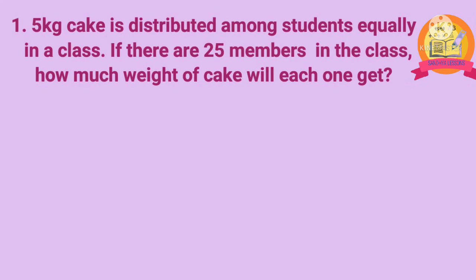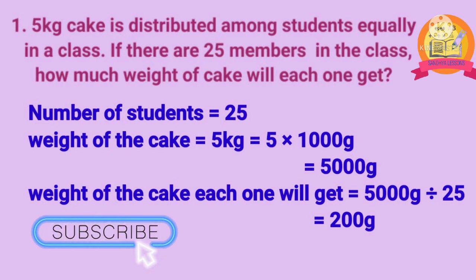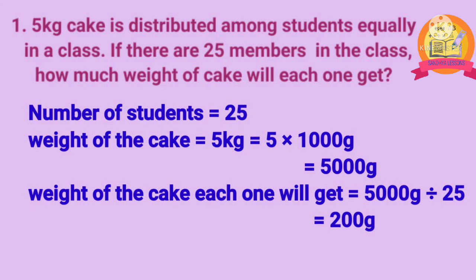Worksheet 11. First problem: 5 kg cake is distributed equally among students in a class. If there are 25 members in the class, how much weight of cake will each one get? Solution: number of students is 25. Weight of the cake is 5 kg, which is equal to 5000 g. Weight of cake each one will get is 5000 g divided by 25. After dividing, we get 200 g. Therefore, weight of the cake each one will get is equal to 200 g.